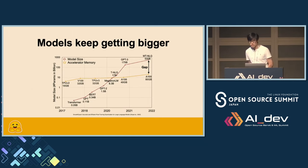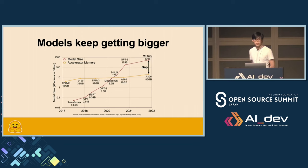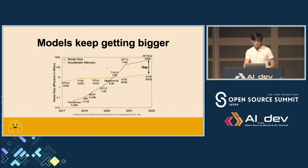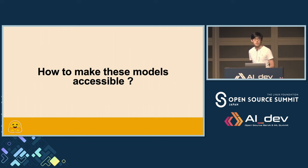Recently, LLMs keep getting bigger and bigger. We started in 2017 with transformers, with a model of 0.05 billion parameters. Now we have LLaMA with 405 billion parameters, which is pretty huge. As you can see in this graph, the GPUs can't follow. In 2022, we had the A100 with only 80 gigabytes of memory, and recently the H200 has around 160 gigabytes — which is still not enough to run these models. So we need to find a way to make these models accessible.